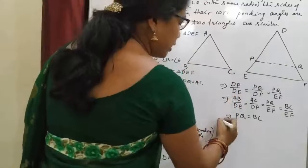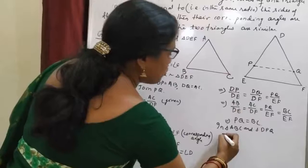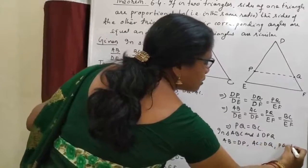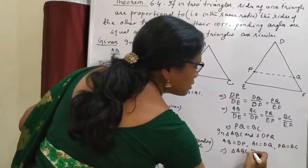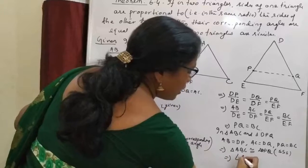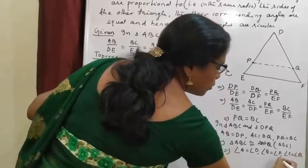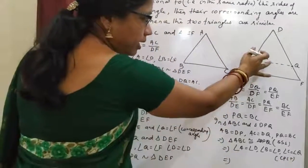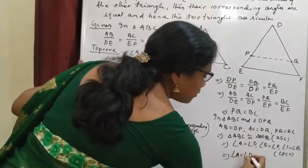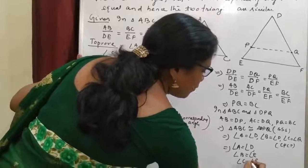Now comparing triangle ABC and triangle DPQ: AB equals DP, AC equals DQ, and PQ equals BC. So this implies triangle ABC is congruent to triangle DPQ by SSS congruence. This implies angle A equals angle D, angle B equals angle P, and angle C equals angle Q by CPCT. But previously we proved angle P equals angle E and angle Q equals angle F.